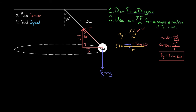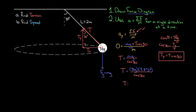Now I can solve for T. Multiplying both sides by m gives zero on the left. Moving mg over and dividing by cosine of 30, I get that the tension equals mg divided by cosine of 30. Plugging in numbers: T = (3 kg × 9.8) / cos30°, which gives a tension of about 33.9 newtons — I'll call it 34 newtons. That's the tension in the rope, the first thing we wanted to find.